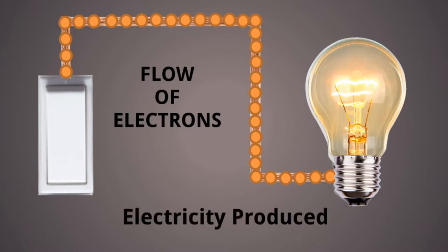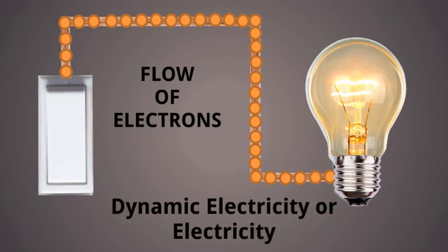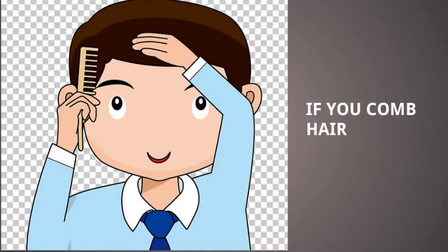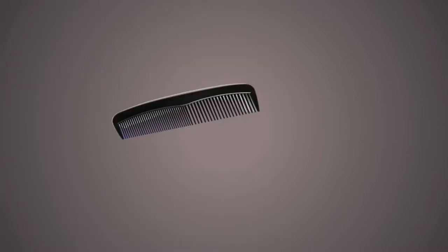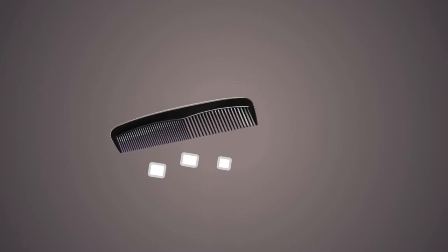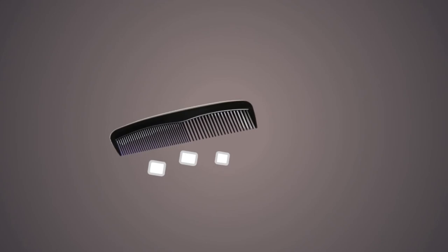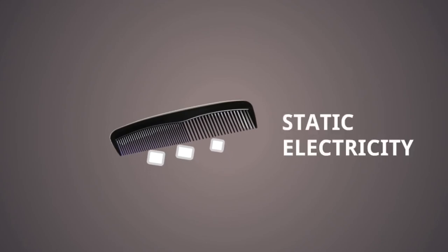But if you comb your hair a few times and if you take some small tiny pieces of paper, if you move your comb toward the paper, you will see all the paper is attracted. So this is also one kind of electricity, and it is known as static electricity. Based on this discussion, there are two types of electricity.